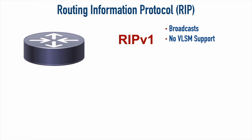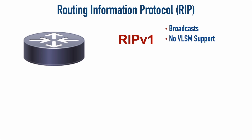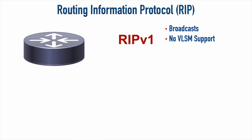Another downside to RIP version 1 is it does not have VLSM support — that stands for Variable Length Subnet Masking. RIPv1 can only advertise classful networks, meaning if you add bits to a subnet mask to divide a network into subnets, it cannot advertise those subnets. It must advertise at the classful boundary. For example, a 10.1.1.0/24 network would be advertised simply as the classful 10.0.0.0/8. RIPv1 also only supports IPv4.